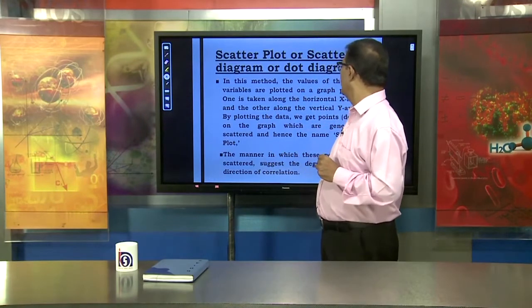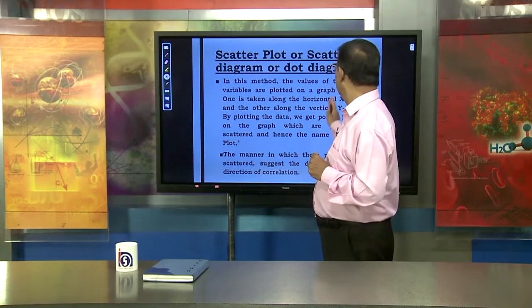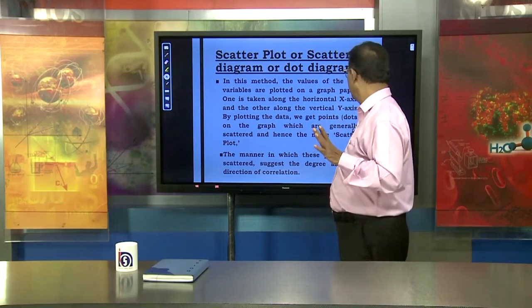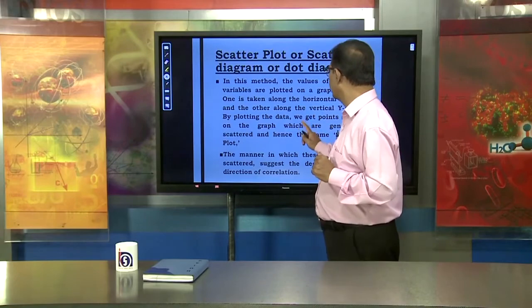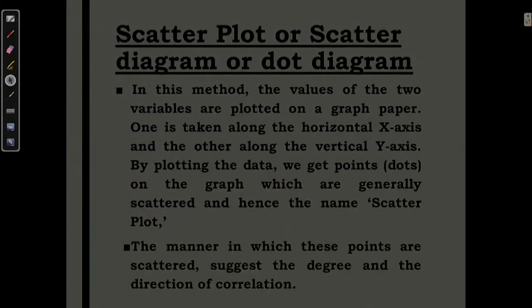Scatter diagram: in this method, the values of two variables are plotted on graph paper on the X and Y axes. We get points on the graph which are generally scattered, and hence the name scatter plot. We plot two variables on a two-dimensional graph, and the resulting diagram suggests the degree and direction of correlation.